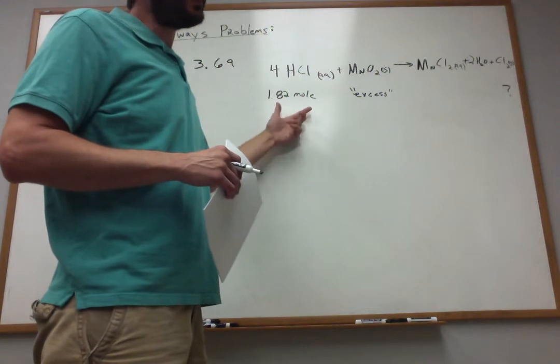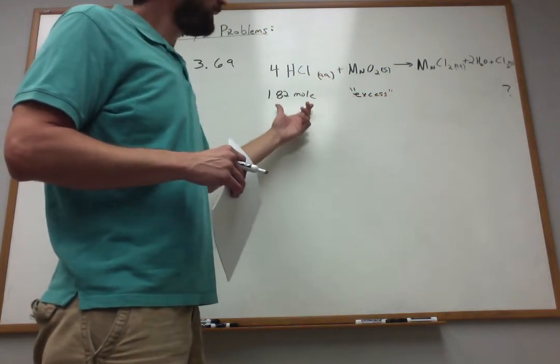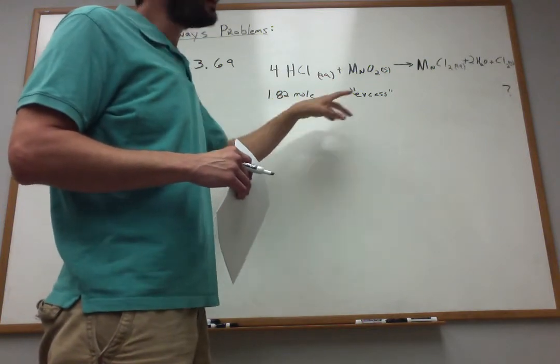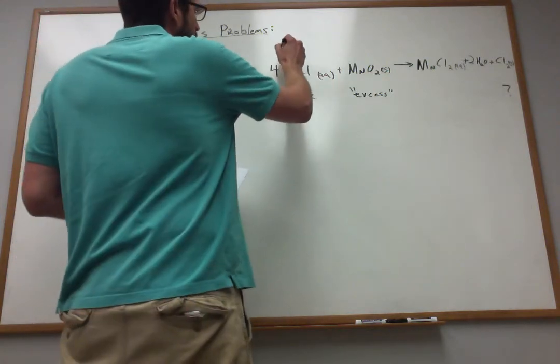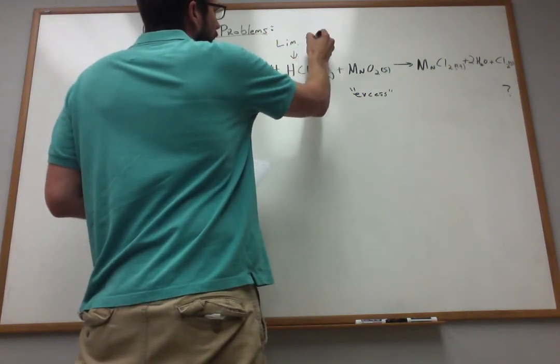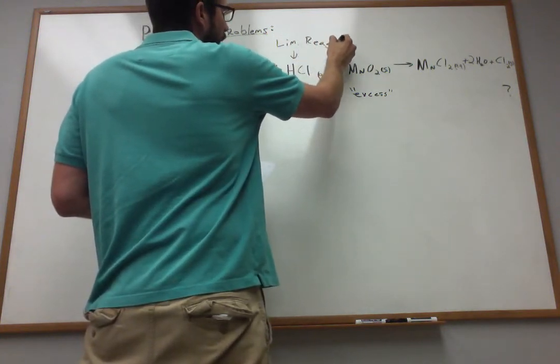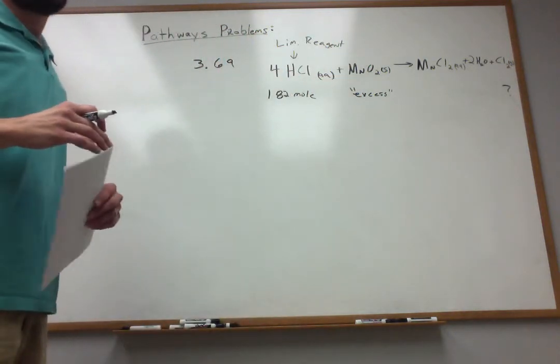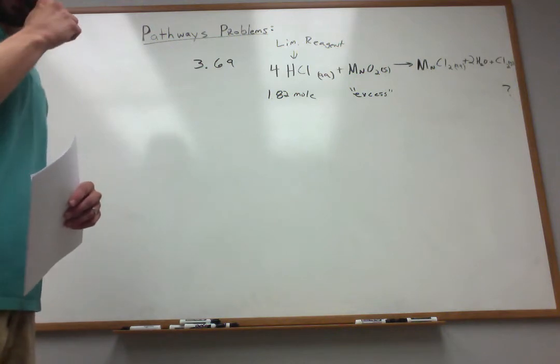And once you run out of this, no more product can be made. So this is our limiting reagent. It limits how much of the product can be made. So you'll find that in these problems, the first goal you will oftentimes face is to figure out what is your limiting reagent. This problem is really nice because it tells you right off the bat.